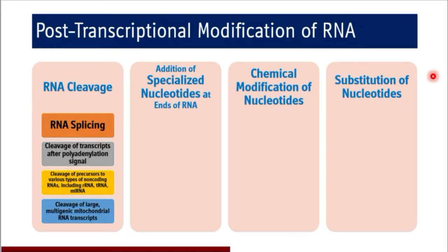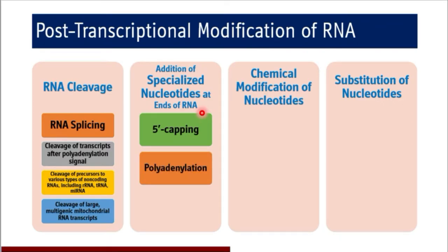Then coming to addition of specialized nucleotides at ends of RNA. Under that, you will see the mechanisms of addition of 5' cap, then we will discuss polyadenylation under the same heading and we will see addition of CCA sequence to 3' end of tRNA. So these three mechanisms are coming under addition of specialized nucleotides at ends of RNA.